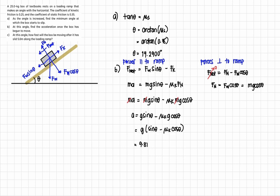So G is 9.81 meters per second squared times sine of 19.29 degrees minus the coefficient 0.25 times G cosine of 19.29 degrees. And that is equal to 0.9259 meters per second squared.